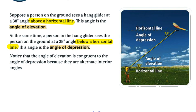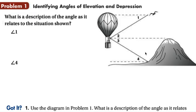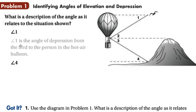Those are your two primary definitions for this lesson. Here's an example with a hot air balloon, a mountain, and a bird. We're going to describe these angles as they relate to the situation. Angle one is measured from the horizontal below that line, so it's an angle of depression — it's the bird looking down at the person. A description might be: angle one is the angle of depression from the bird to the person in the hot air balloon.